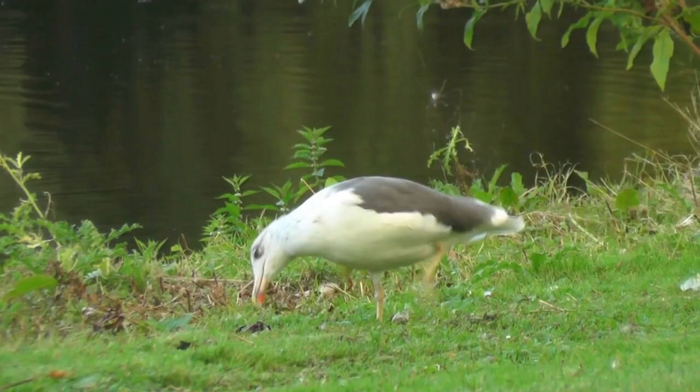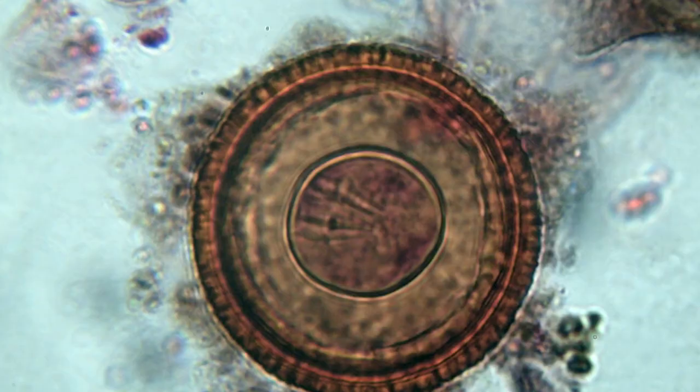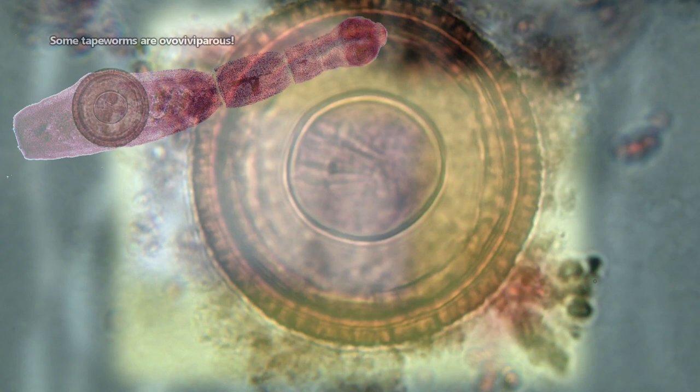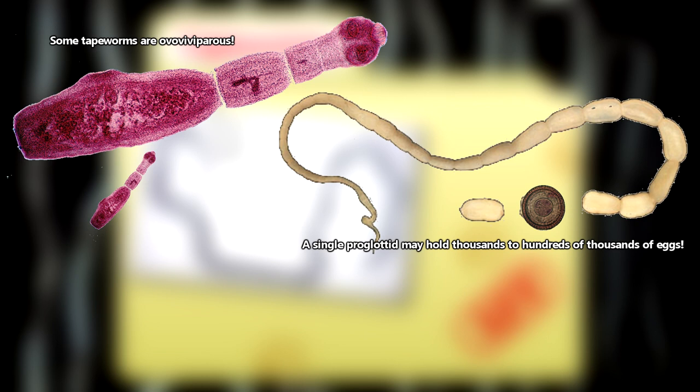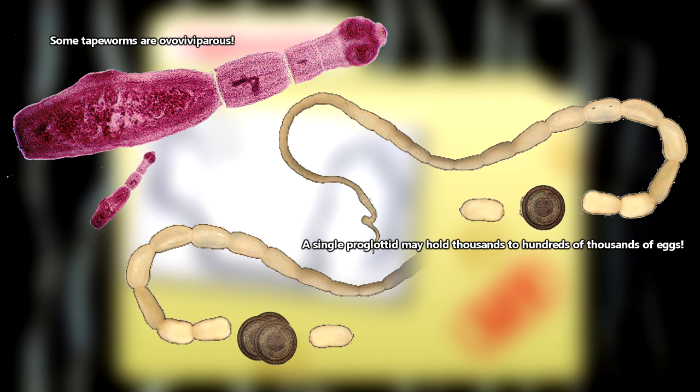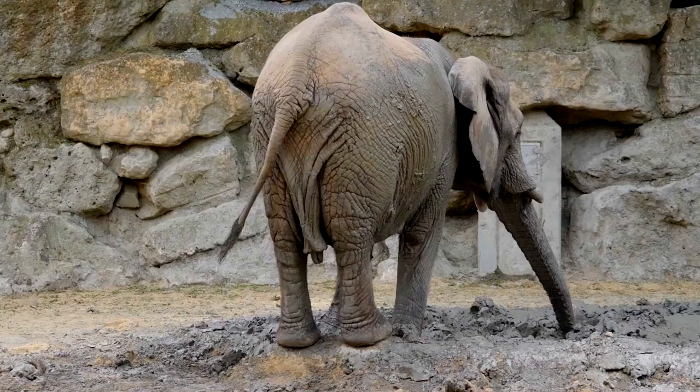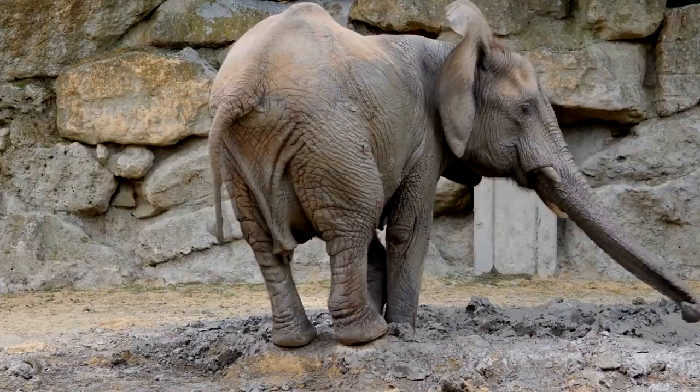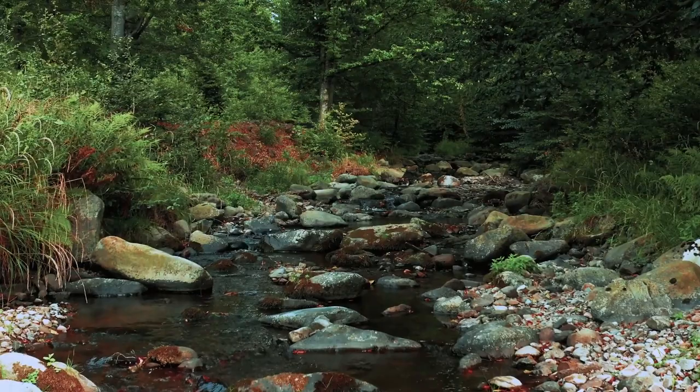We'll explain the tapeworm life cycle in brief here, but remember there are thousands of species, so of course variation exists. A tapeworm begins life as an egg. The egg may be retained in the adult and then hatch, the egg may be released within those body segments we talked about previously, or the segment may dissolve to release the eggs. Typically, the eggs get out of the host's body through the host's feces. In many cases, the larvae end up in water and swim until consumed by their first intermediate host. This host is often a copepod or other small crustacean.